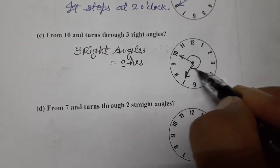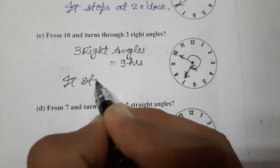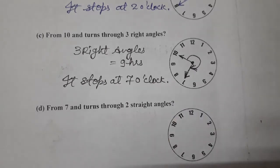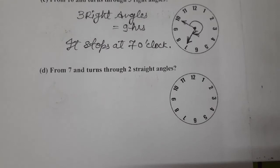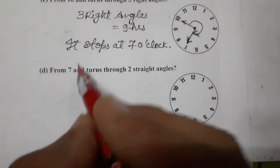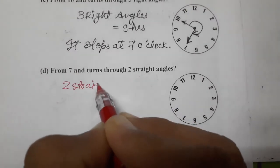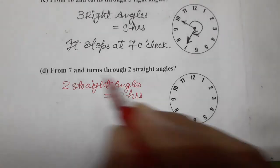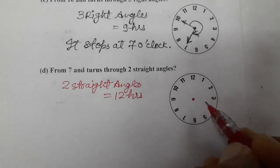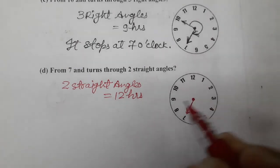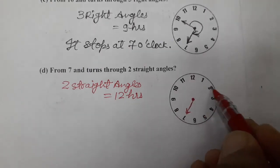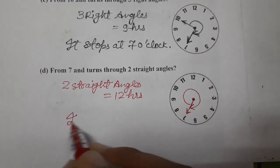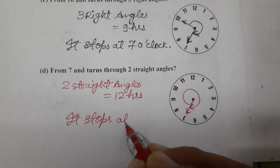Last one: starting from 7, turning through two straight angles. Two straight angles equals four right angles, and four right angles equals 12 hours. Moving 12 hours clockwise from 7: one through twelve — we return to the same point. So it stops at 7 o'clock only.